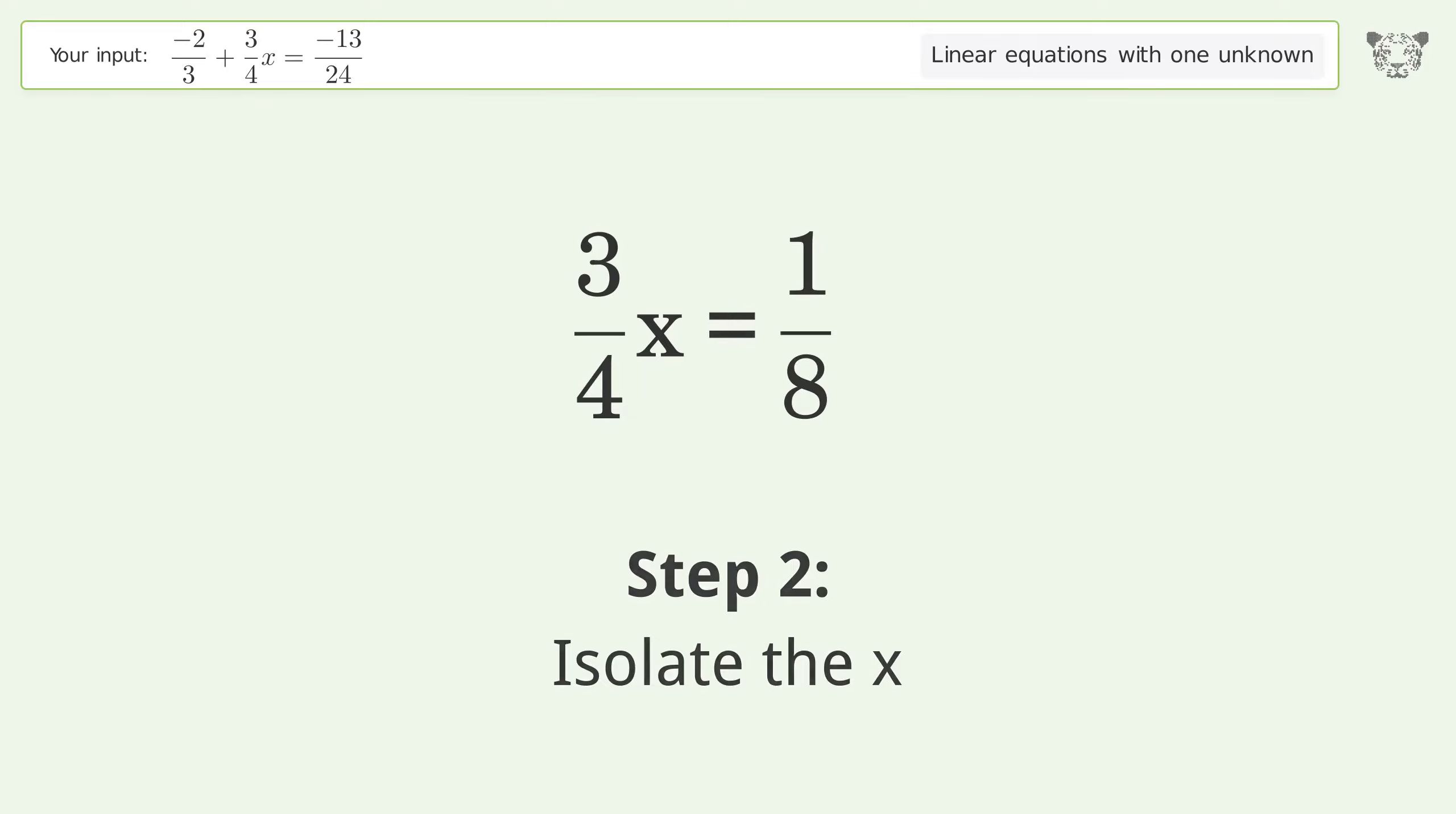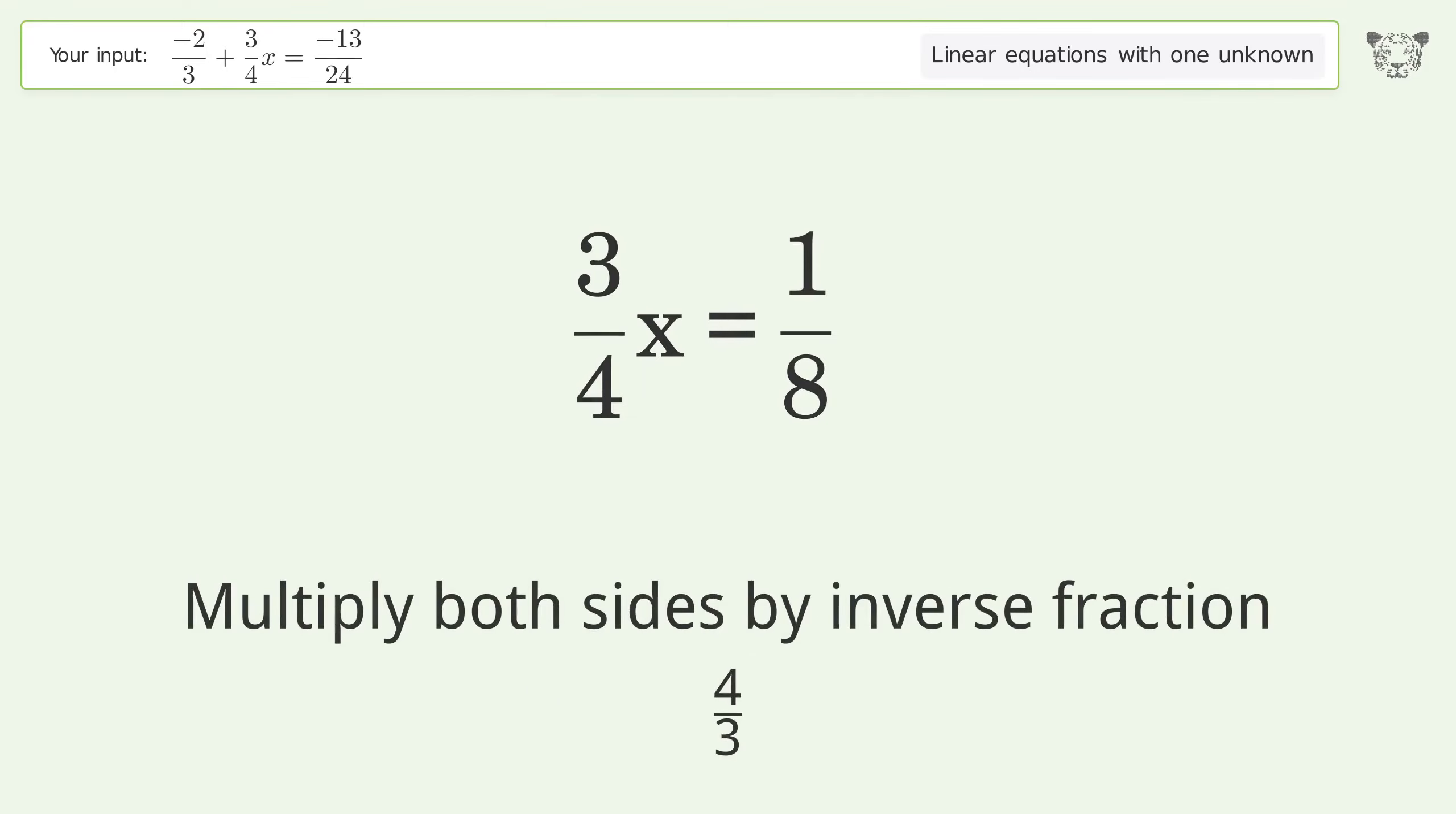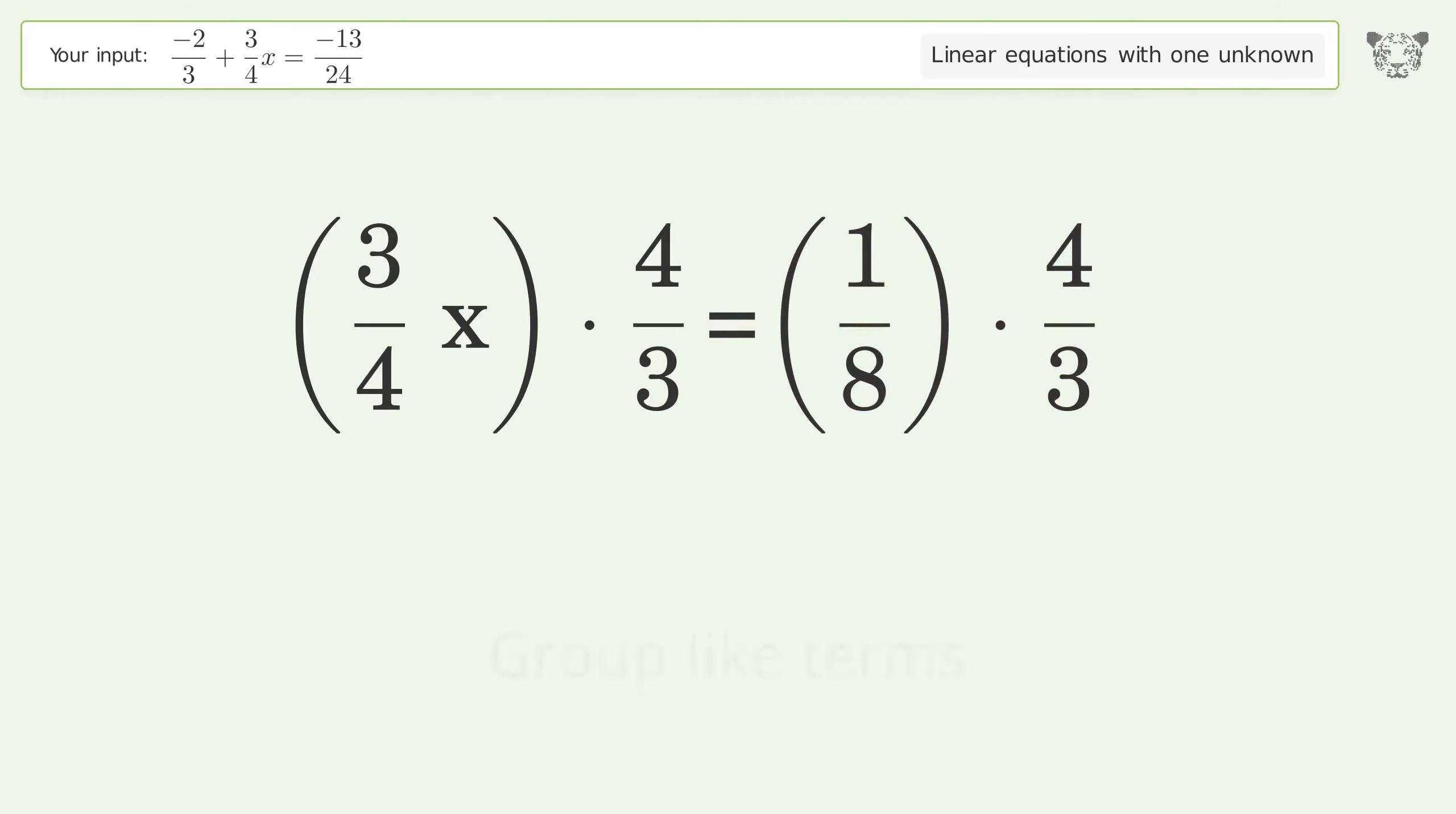Isolate the x. Multiply both sides by the inverse fraction 4 over 3. Group like terms.